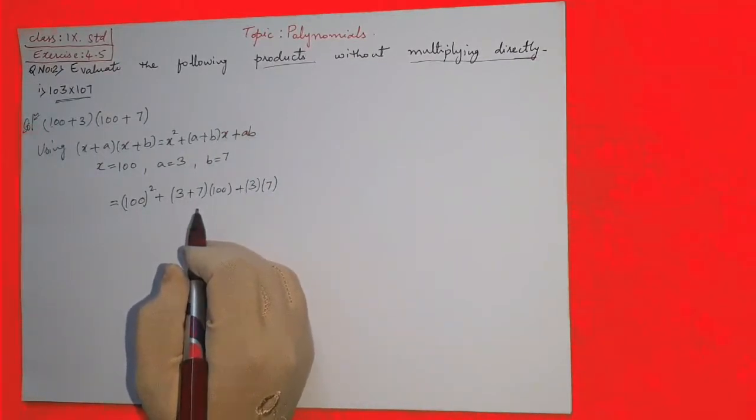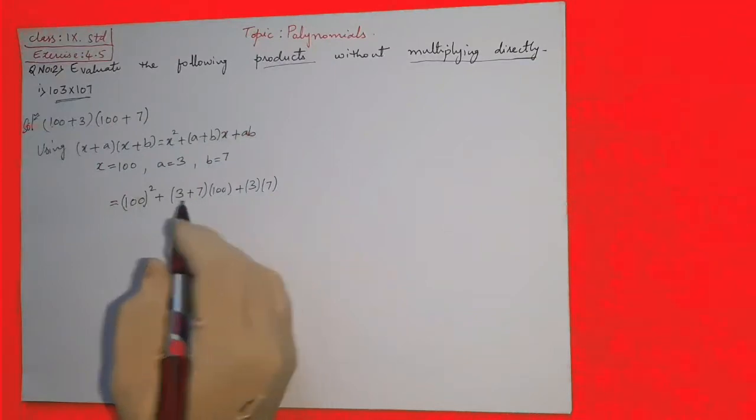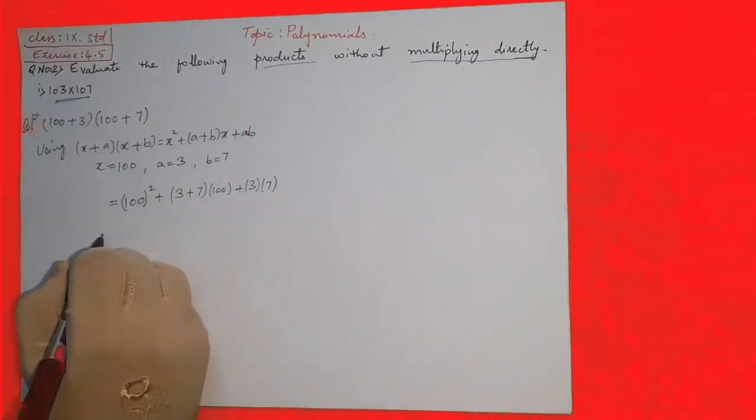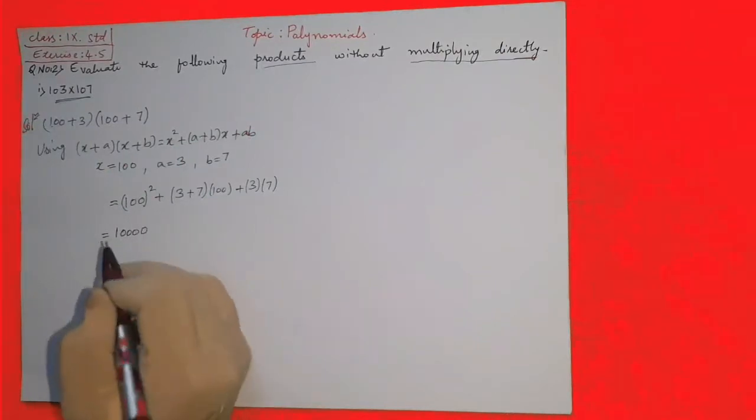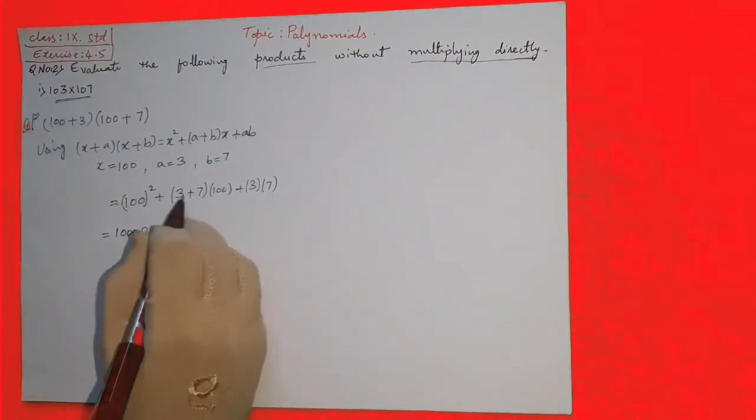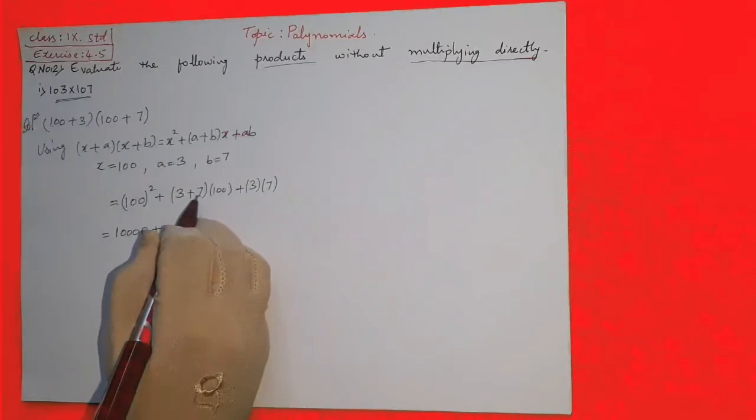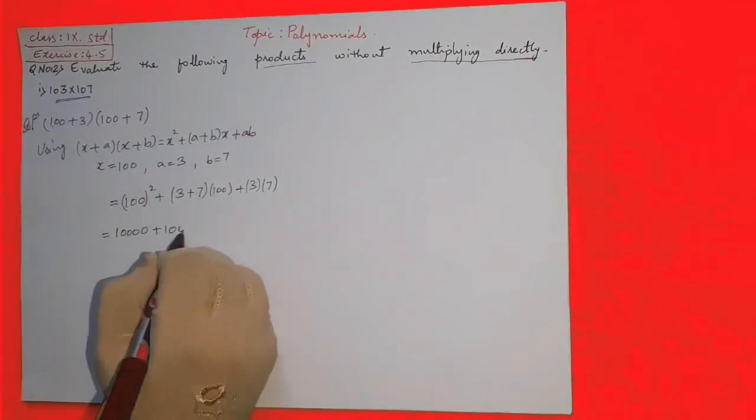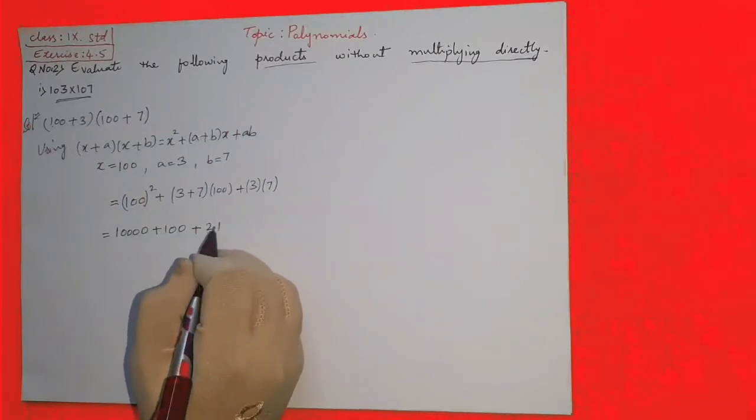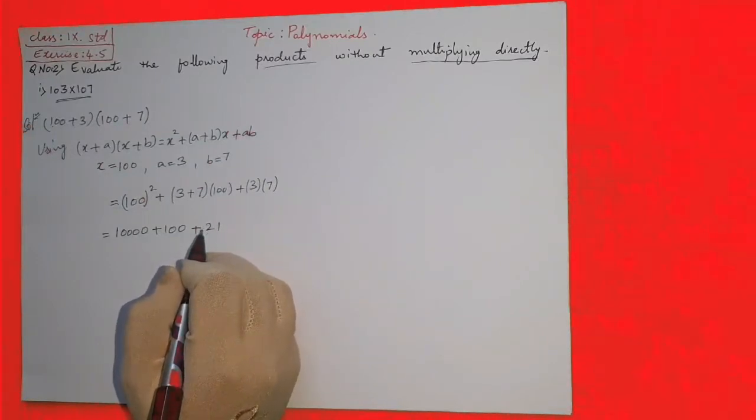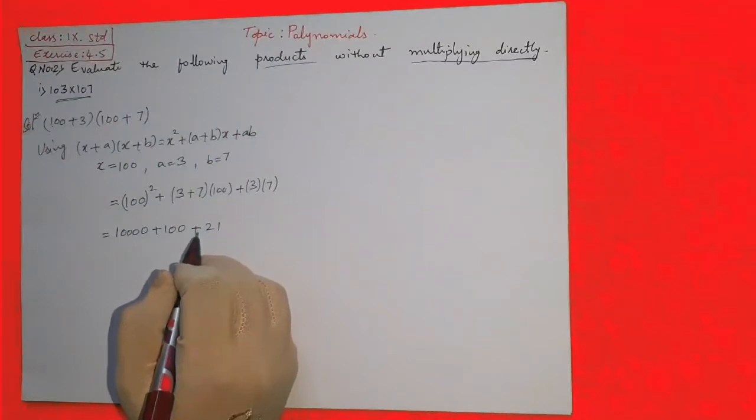100 square means 100 into 100, so it is nothing but 10,000 plus 3 plus 7 is 10, 10 into 100 is 1000, plus 3 into 7 is 21. Now in the last step we have to add all the numbers: 10,000 plus 1000 plus 21.